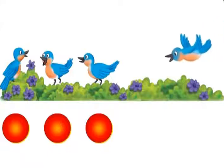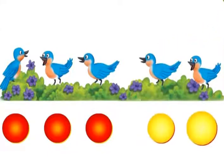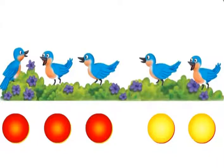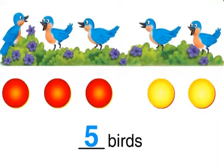Two more birds fly over to join them. Let's use two yellow counters, one for each new bird. Now there are five birds singing in the grass. We have five counters — one for each bird. So let's write a five in the answer blank. We have five.